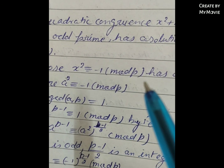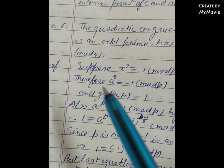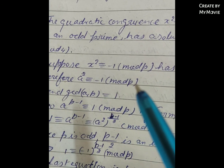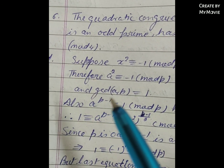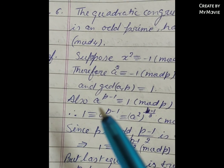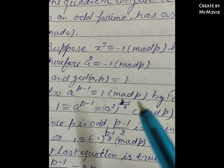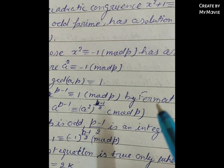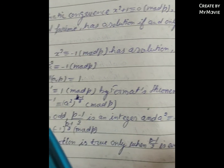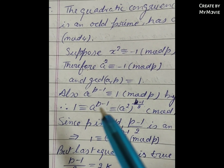Say a is a solution, so a² ≡ -1 (mod p). Then gcd(a, p) = 1, and by Fermat's theorem, a^(p-1) ≡ 1 (mod p).